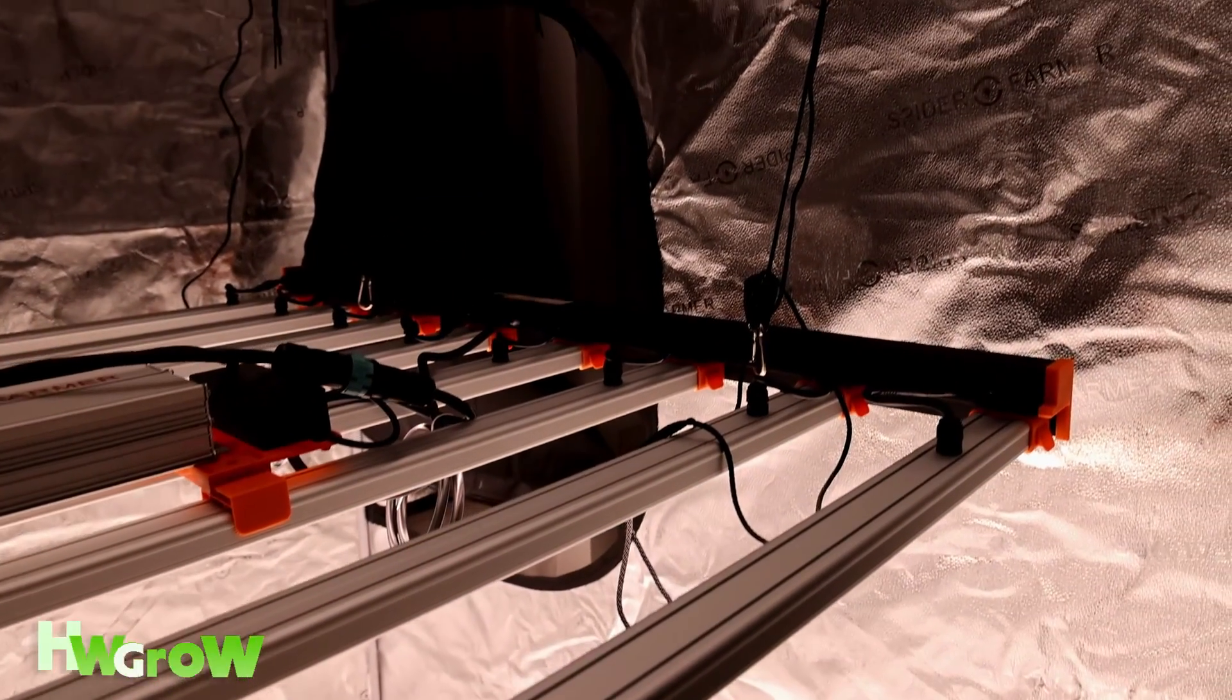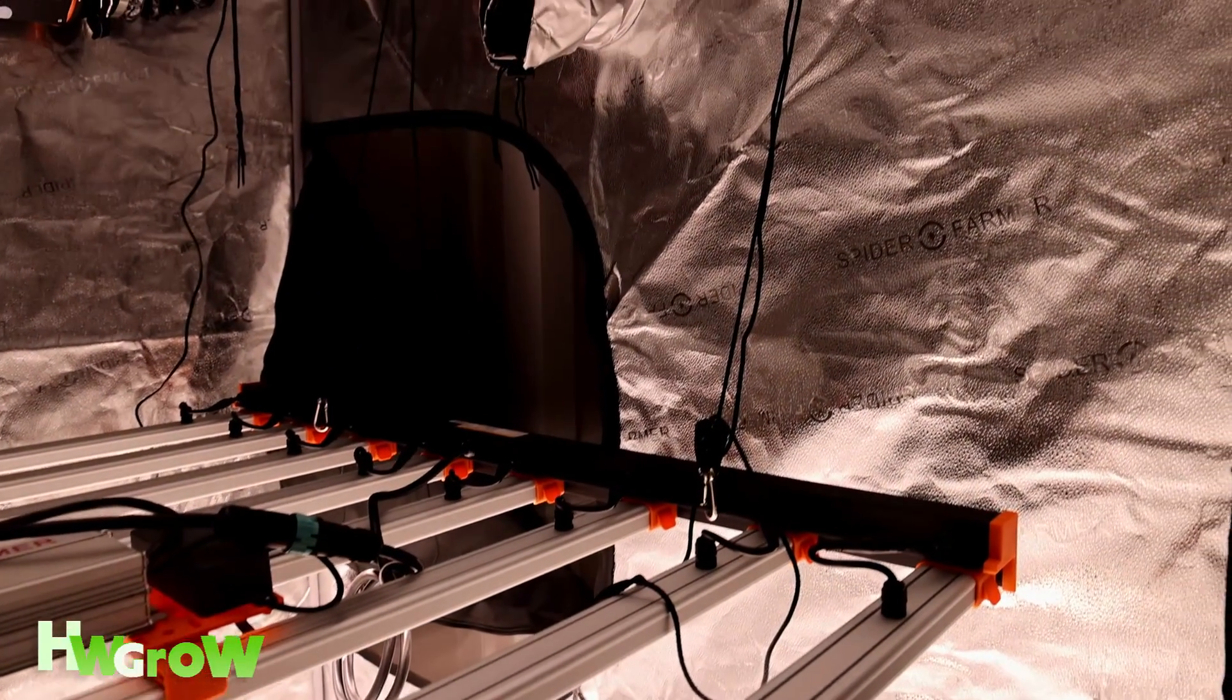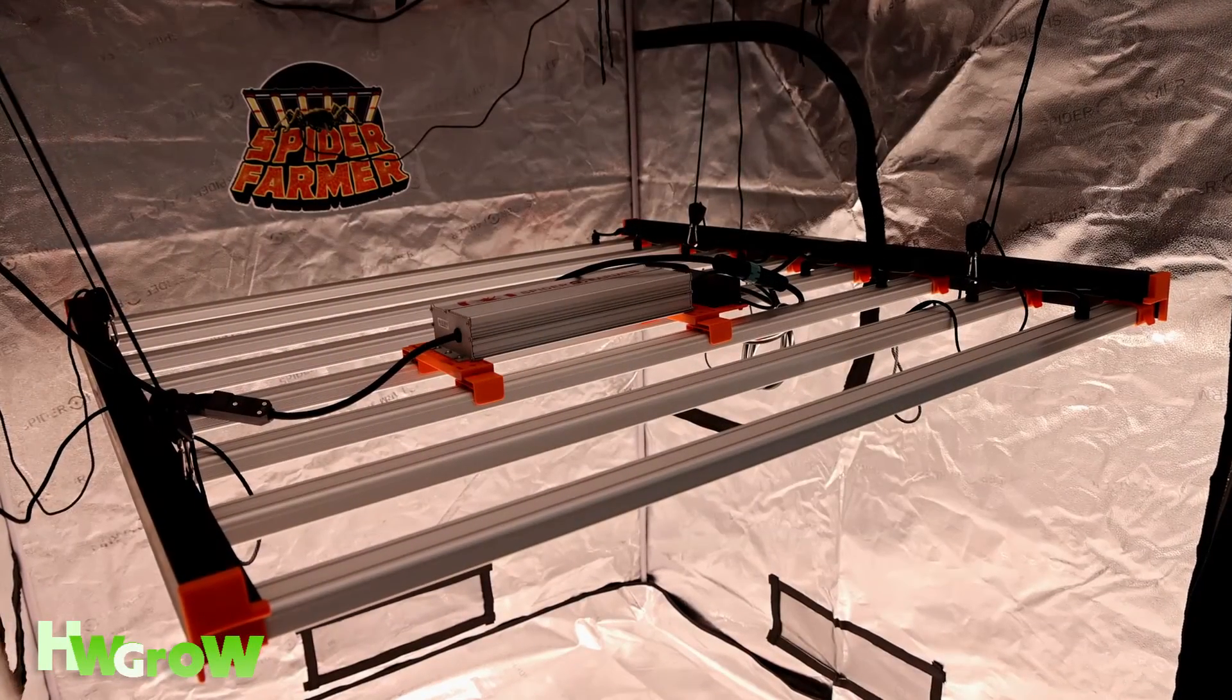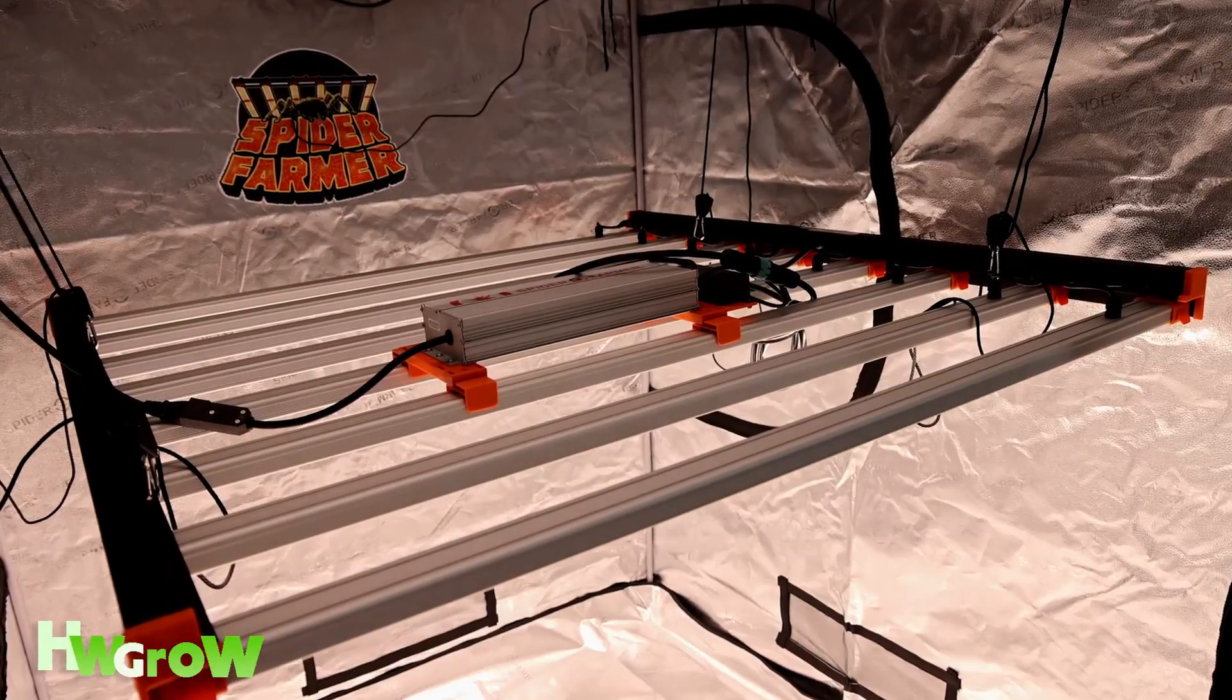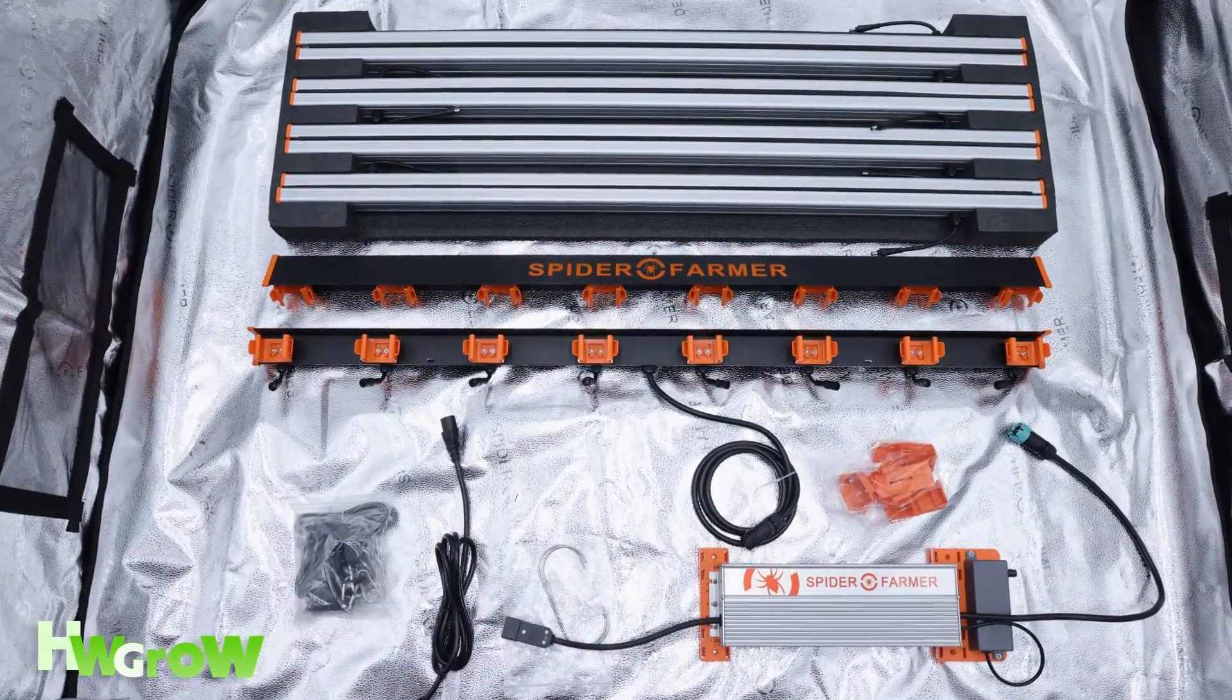In this video, I'm going to show you how to hang a large LED grow light. The light we'll be installing is a Spider Farmer SE7000 and any large LED grow light will basically have the same setup.